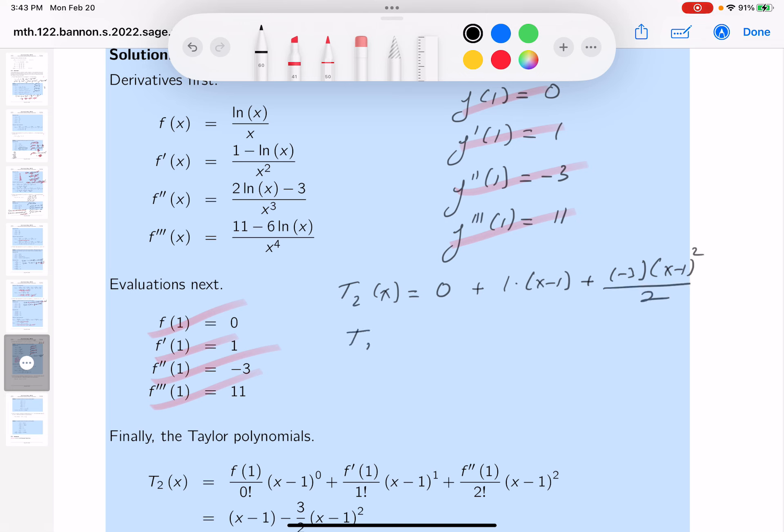And it's going to be over 2. Let's write this down. Now, T2 is going to be x minus 1. And it's going to be minus 3 halves x minus 1 squared. Let's write down T3.